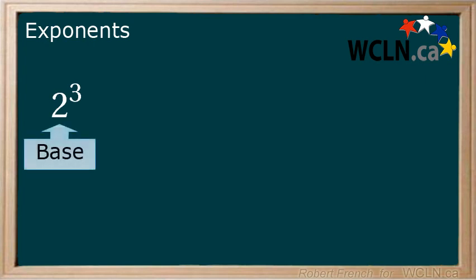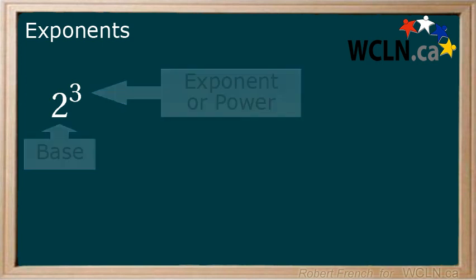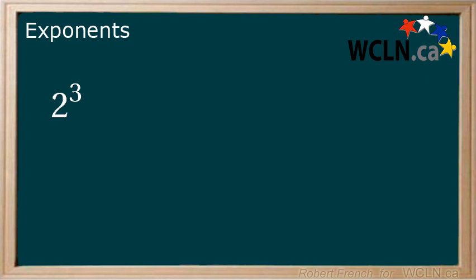The base number is the number being multiplied and the exponent is how many times you multiply the base by. 2 to the power of 3 is equal to 2 multiplied by 2 multiplied by 2, which is equal to 8. This is sometimes written in general form as x to the power of y, which is how you will see it on your calculator.